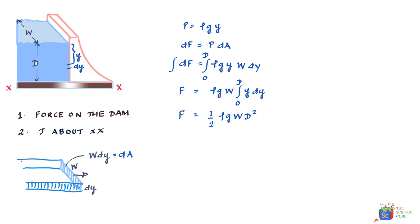So what we'll do is we'll say that the delta torque due to this slice of water at this point can be given as the product of the delta force into the distance from the line xx of this slice of water, which we know is nothing but d minus y.